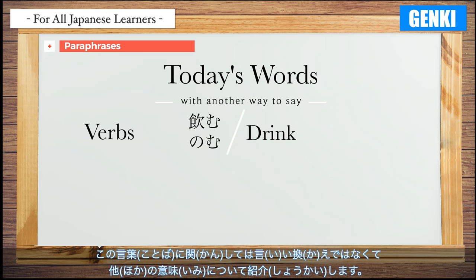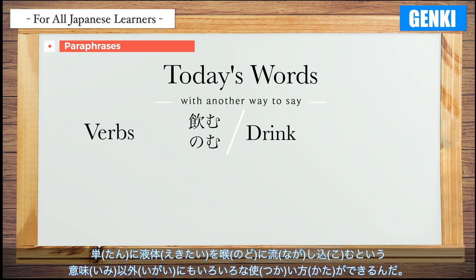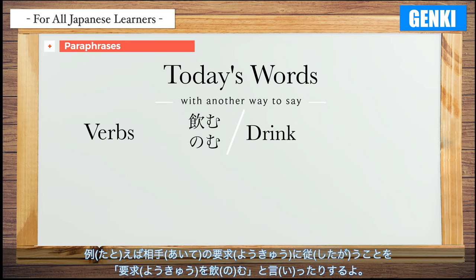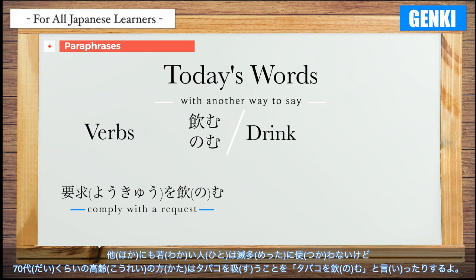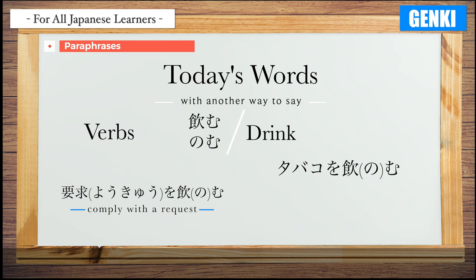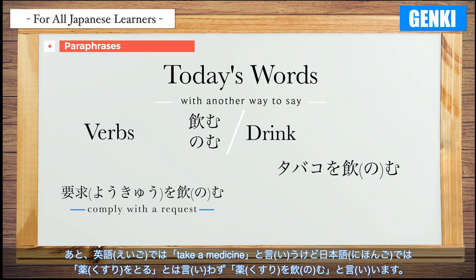Regarding 飲む (to drink) — it can be used in many ways other than simply meaning to pour something down one's throat. For example, to comply with someone's requests is called 要求を飲む. Another example: older people in their 70s or so will say タバコを飲む to mean 'to smoke a cigarette,' though young people rarely use this. Also, in English you say 'take a medicine,' but in Japanese we don't say 薬を取る — we say 薬を飲む.